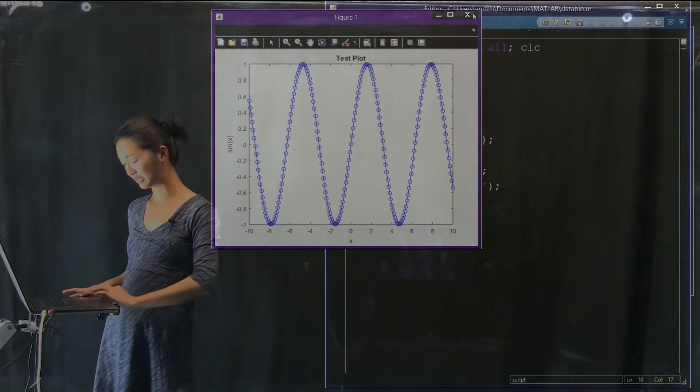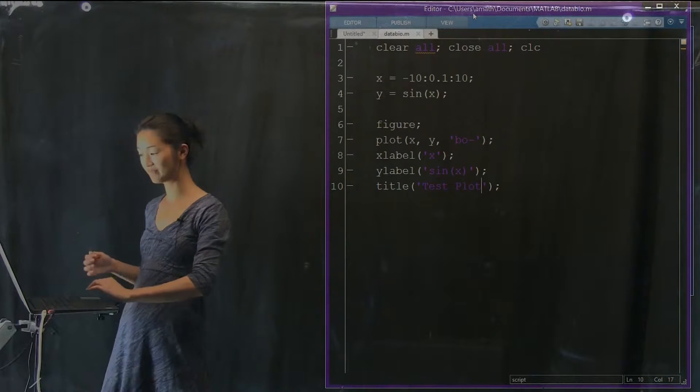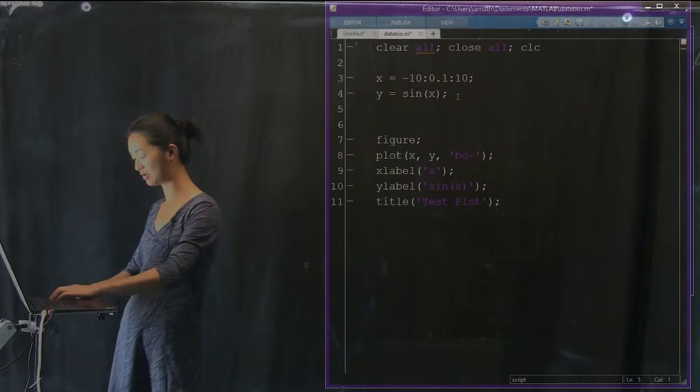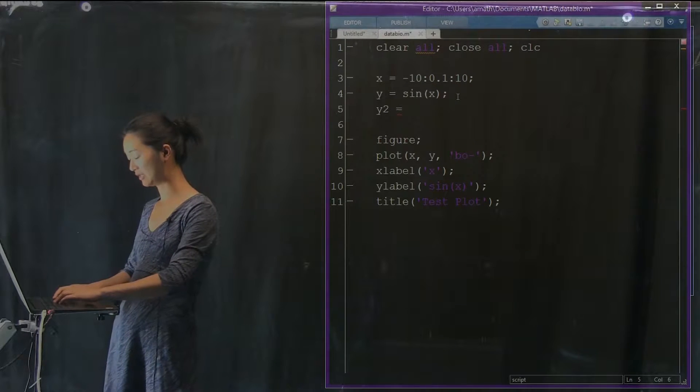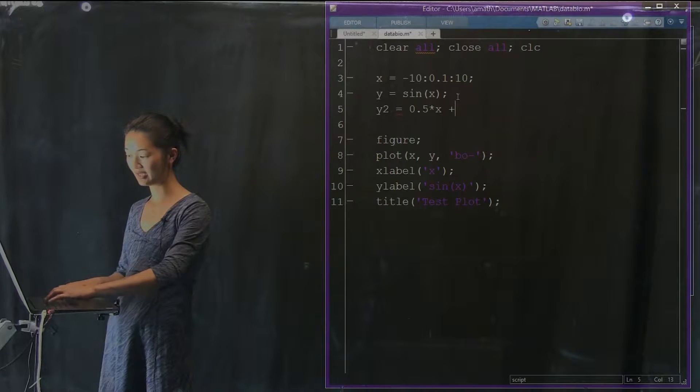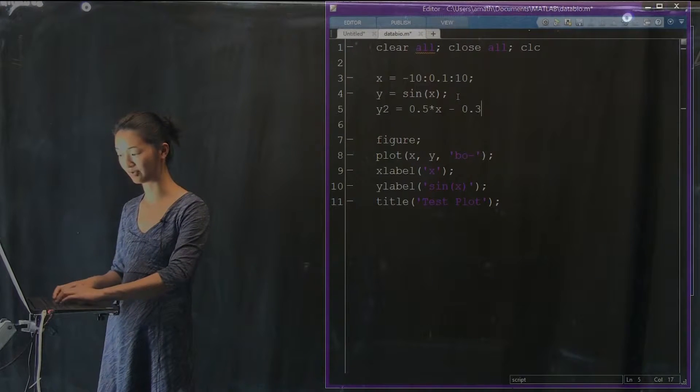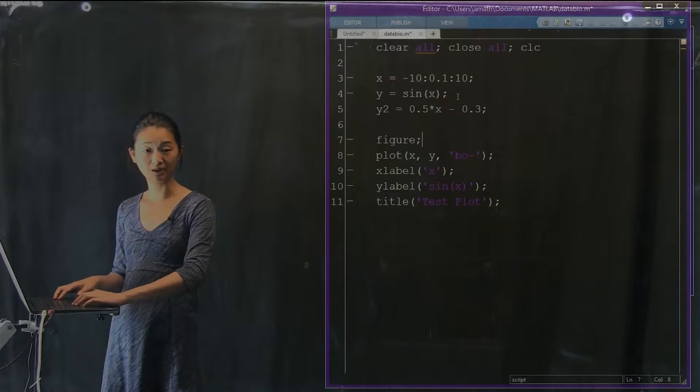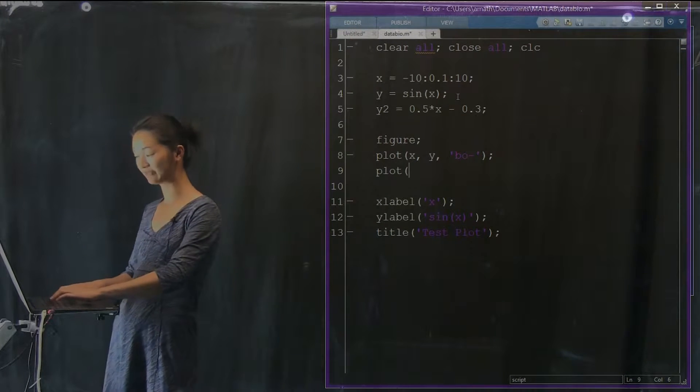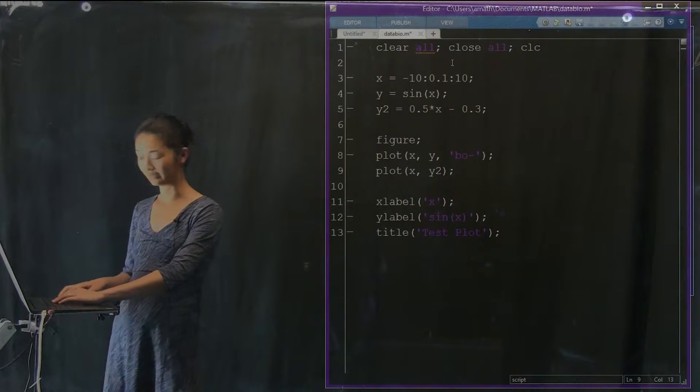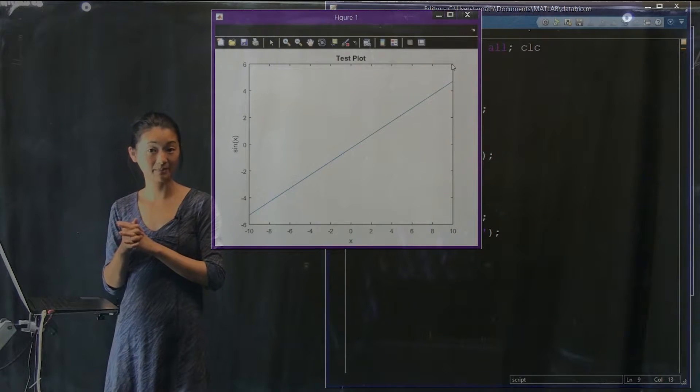So now what if we wanted to plot more than one thing on the same plot? So let's say in addition to the sine function, I also want to plot a line. So I'm going to make another vector here that I'm going to call y2, which is going to be a line and it's going to have a slope of 0.5 times x and it's going to have a y-intercept of negative 0.3. So if we wanted to plot more than one thing on the same plot, the thing that you think you might be able to do is just call the plot function again and say xy2 and let's run that and see what happens. Oh, look what happened. I plotted my line but my sine function is gone.